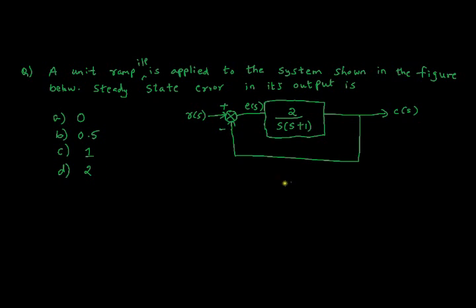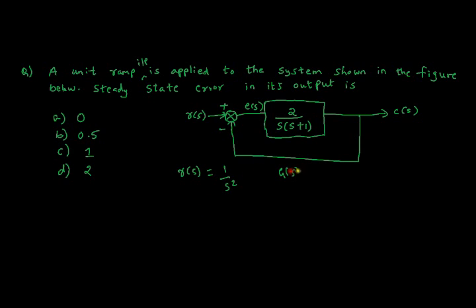As you can see, this is a typical control system block. This is G(s) and R(s); ramp is given. You can write R(s) = 1/s² because this is the ramp input, and G(s) = 2 / [s(s+1)].